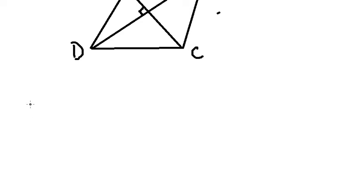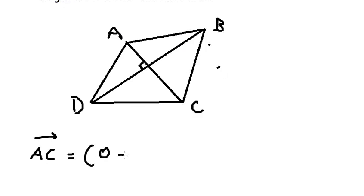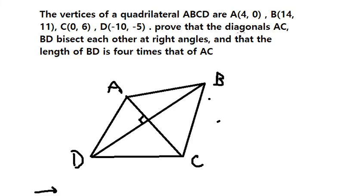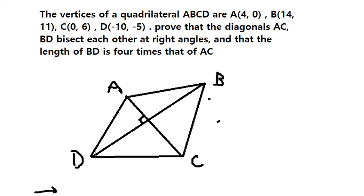We need to find vector AC. So we have 0 minus 4 and 6 minus 0, and this gives us negative 4, positive 6. Now we need to find vector DB.